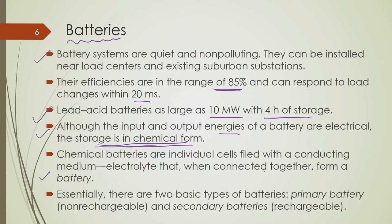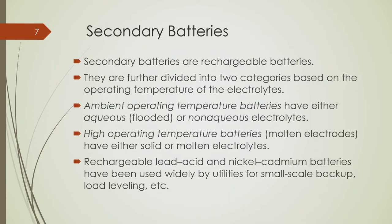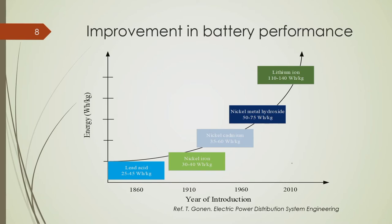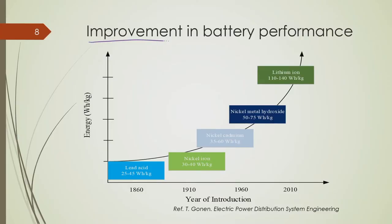Batteries use electrolytes and electrodes. There are two types: non-rechargeable and rechargeable — here we are talking only about rechargeable secondary batteries. For secondary batteries, ambient temperature is an important aspect. High operating temperature batteries in molten electrolyte form are also available. Rechargeable lead acid and nickel cadmium batteries are used for utility-level energy storage, and price must be considered when selecting a battery for a specific purpose.